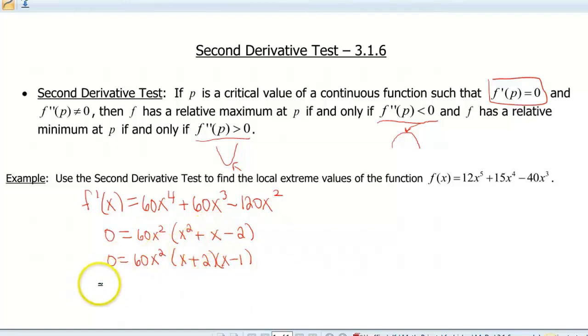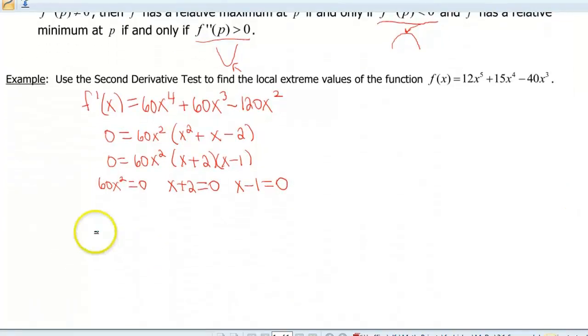Okay, so then our critical values are going to be when each of these pieces is equal to 0. So 60x squared is 0, x plus 2 is 0, and x minus 1 is 0. Let me scoot this down, get a little bit more room. Okay, so that's going to give us that x is 0, x is negative 2, and x is a positive 1. Okay, so these are our critical values.